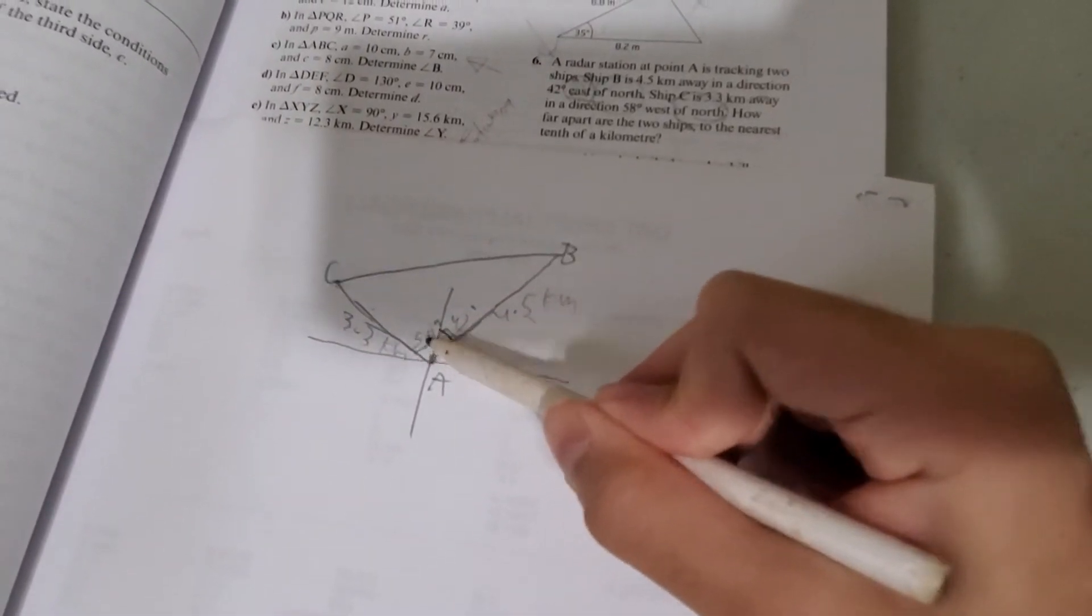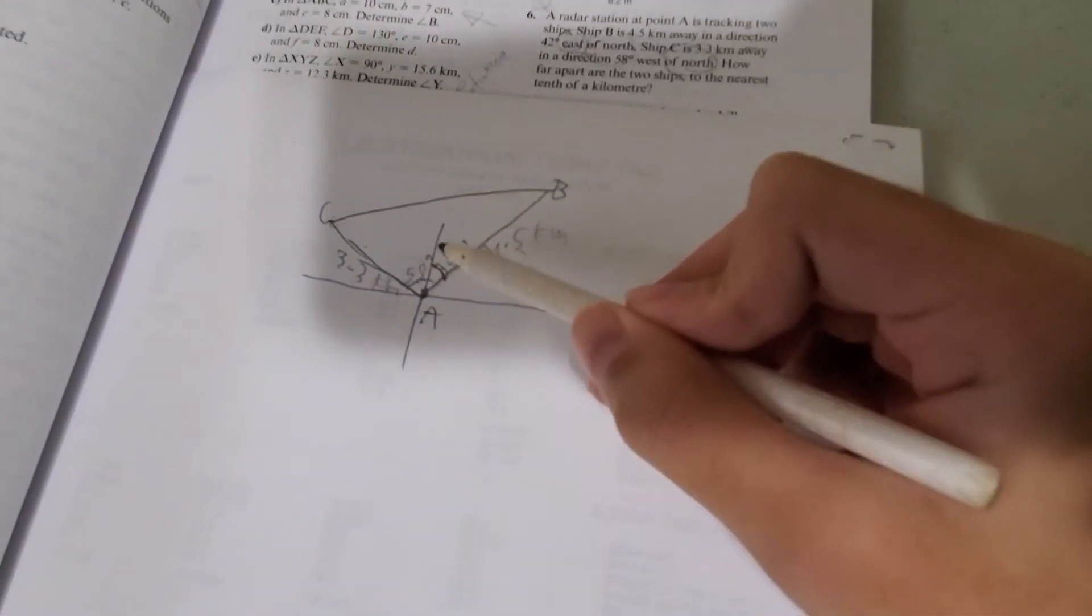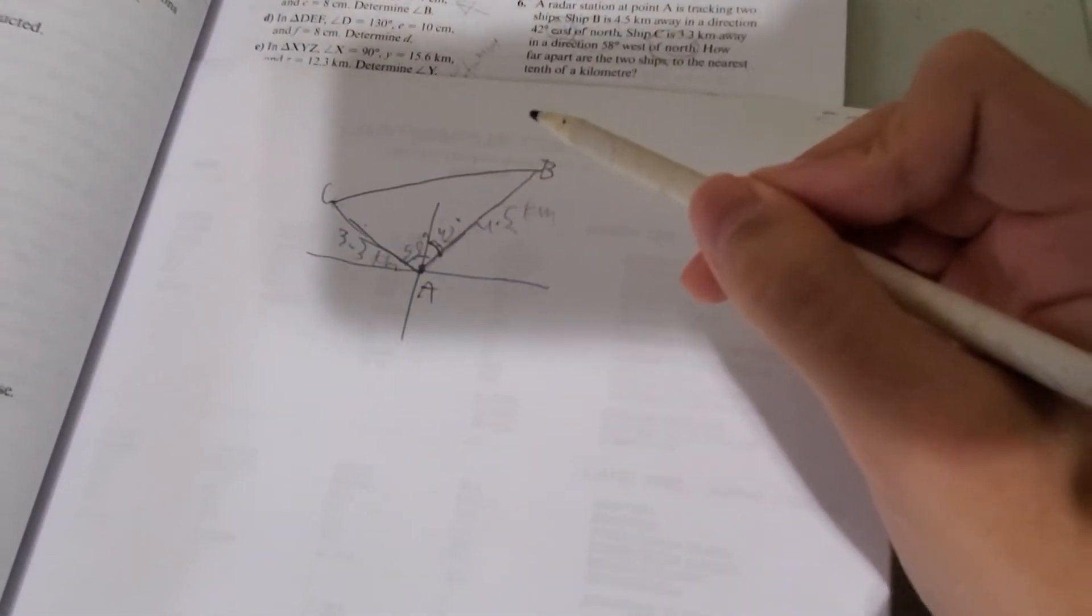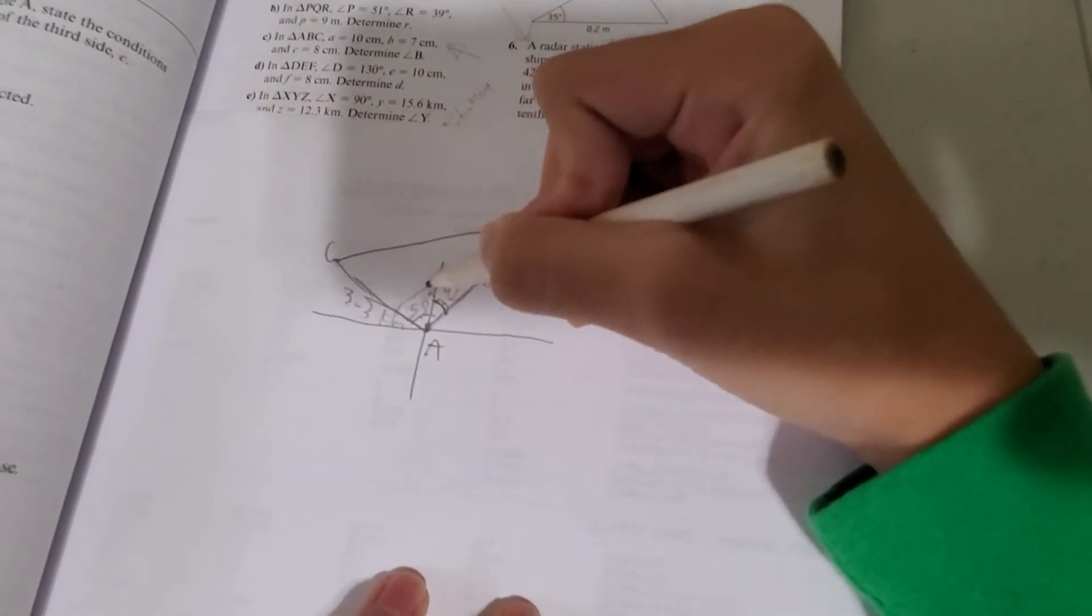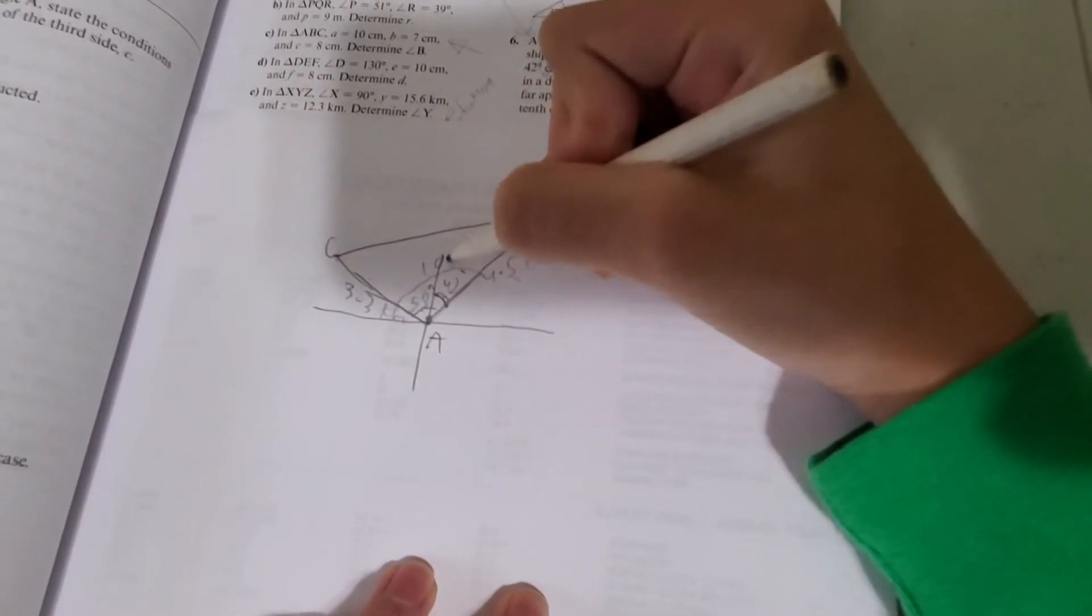First of all, let's add up these two angles. These two given angles. 58 degrees plus 42 degrees. And that, we get 100 degrees. That's the total angle. 100 degrees.